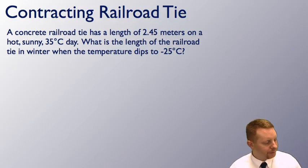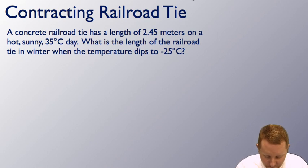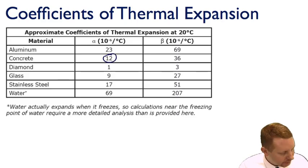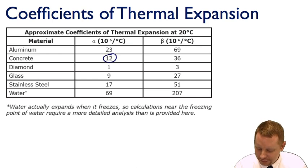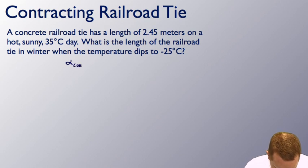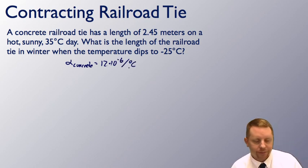Let's take a look at an example. A concrete railroad tie has a length of 2.45 meters on a hot, sunny 35 degrees Celsius day. What is the length of the railroad tie in winter when the temperature dips to minus 25 degrees C? Well, the first thing I would do here is I'm going to go back and find out the linear coefficient of expansion for concrete. It is 12 times 10 to the minus 6 per degree Celsius.